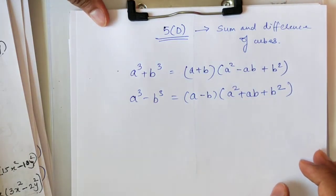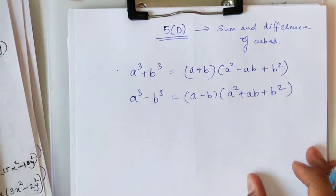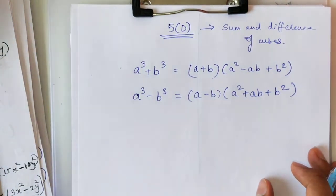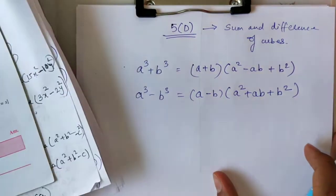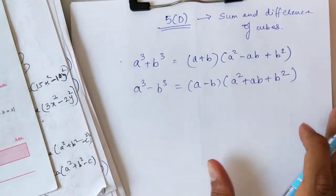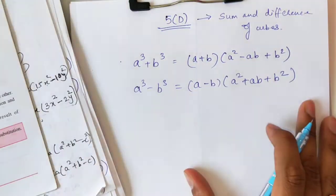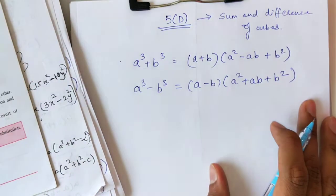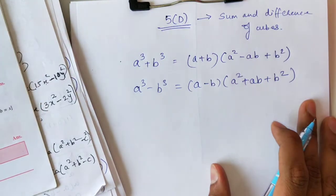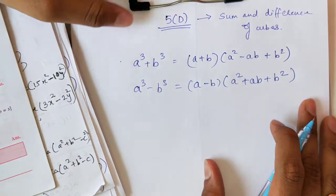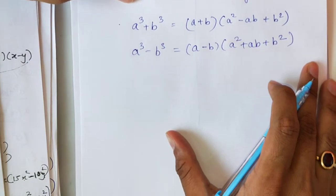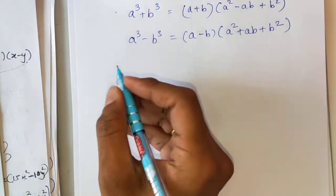This exercise is similar to Exercise 5C which we did, and there are comparatively fewer sums. Exercise 5E is a miscellaneous exercise and it will be omitted in school, so don't worry. We have to do Exercise 5D only. Let's start.